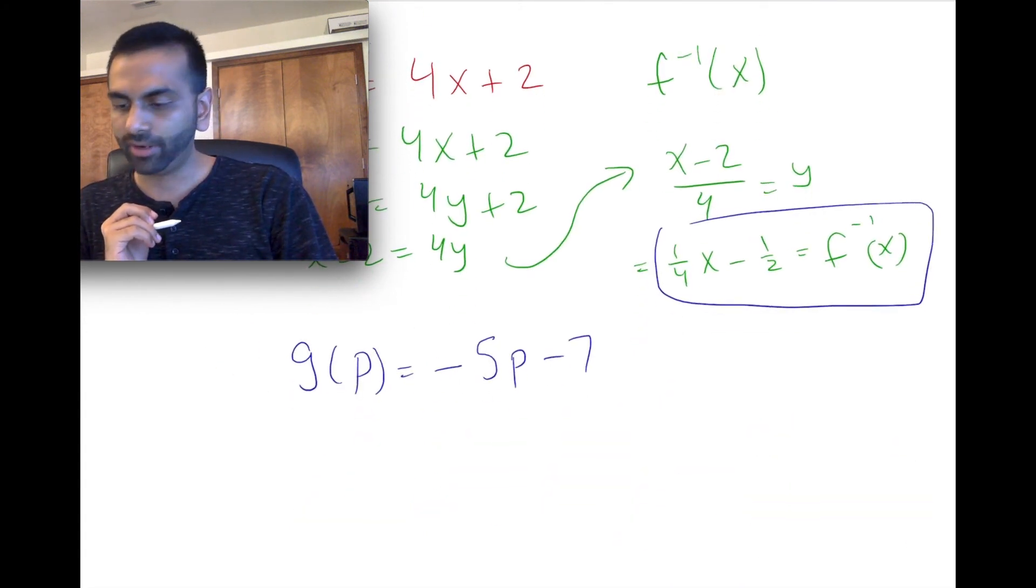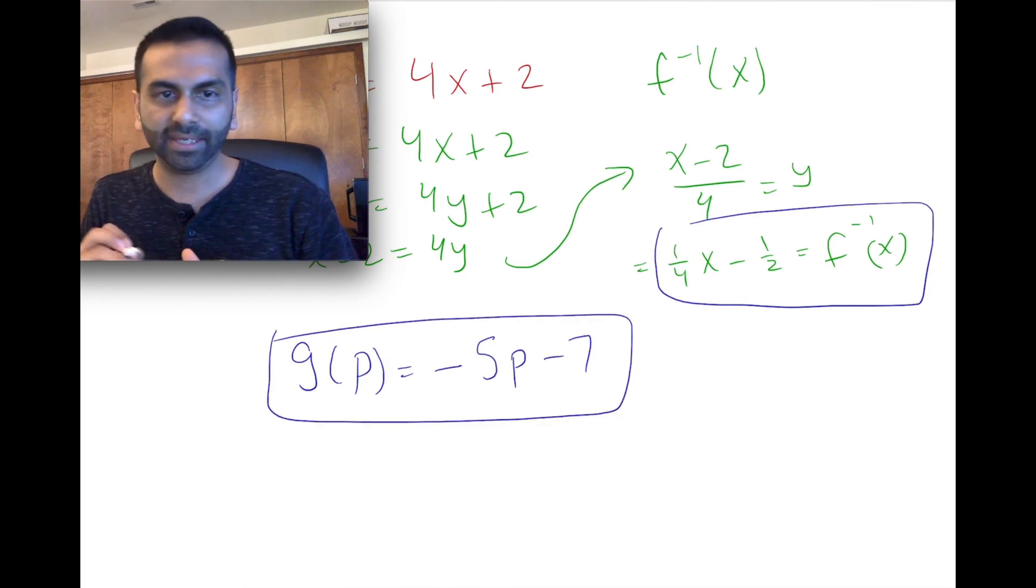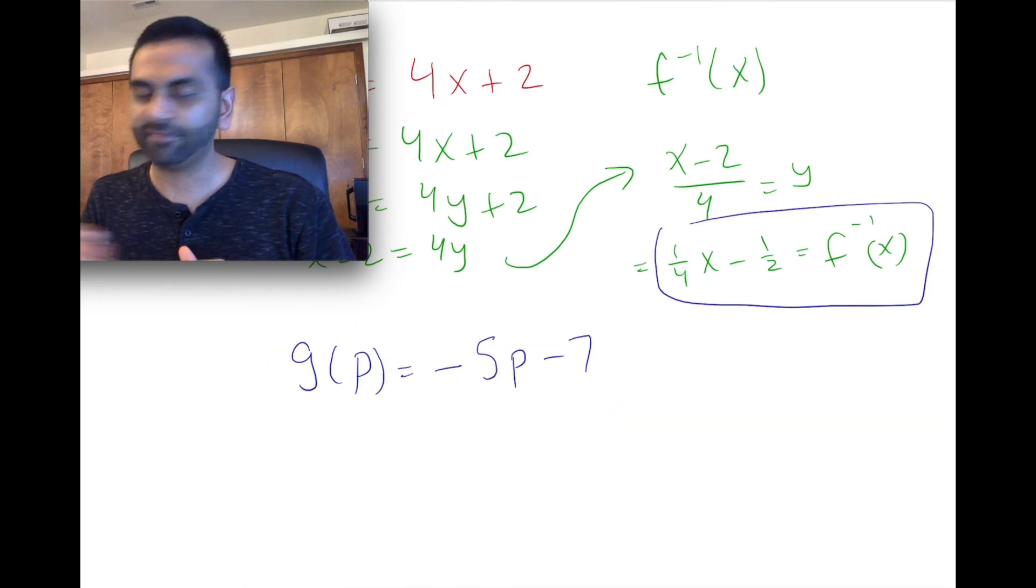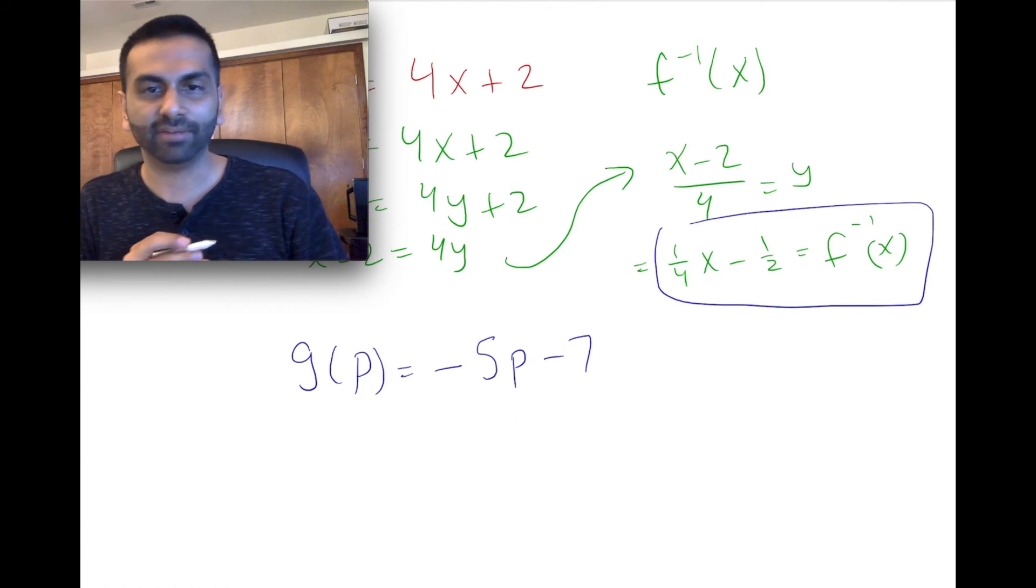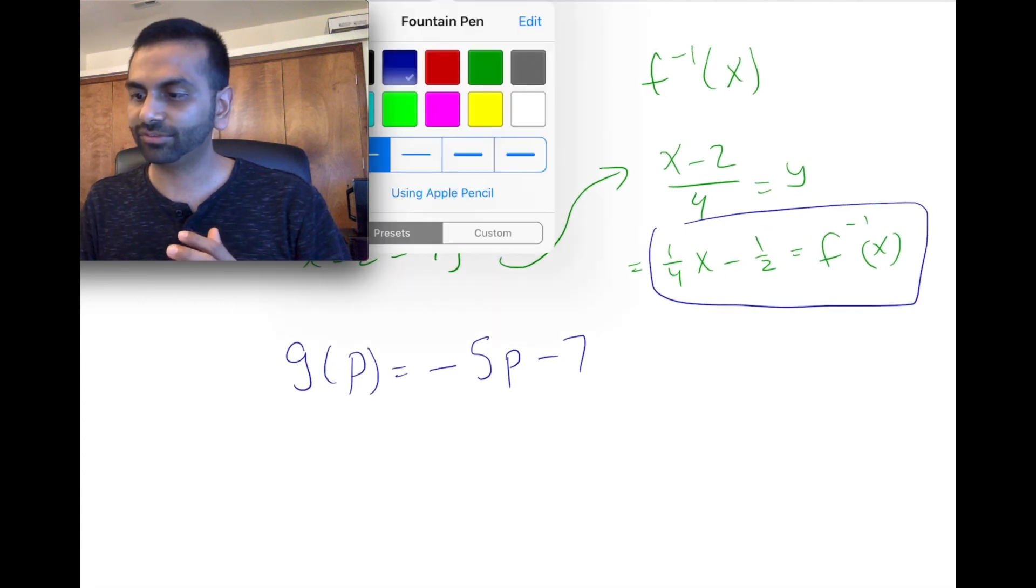But let's have one more example here. Let's say your function is this g of p is equal to negative 5p plus 7, minus 7. All right. Well, again, even though there's not x's and y's here, it's really the same exact process.